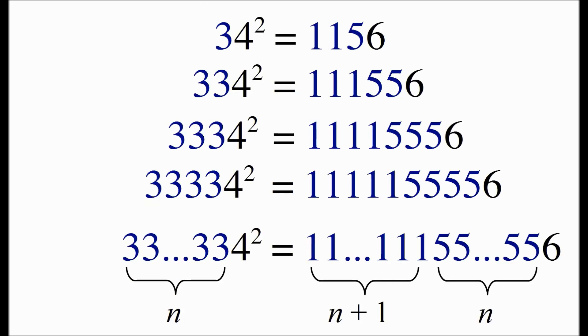We'll start out by proving the formula for numbers that start with a string of 3s and end in a 4. So let's take a number that has n number of 3s as its leading digits and the number 4.